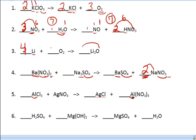1 aluminum, 1 aluminum. 3 chlorines, only 1 chlorine. So I'm going to put a 3. That's also going to affect my silvers. So I want to have 3 silvers. So I'm going to put a 3 in front.